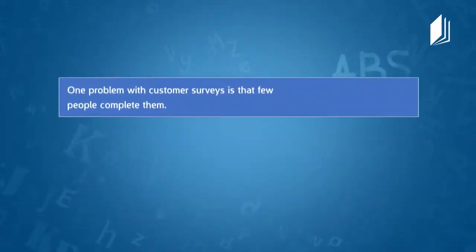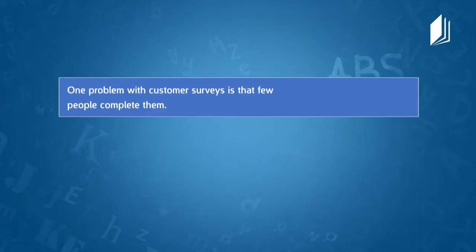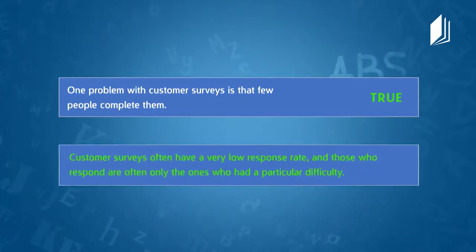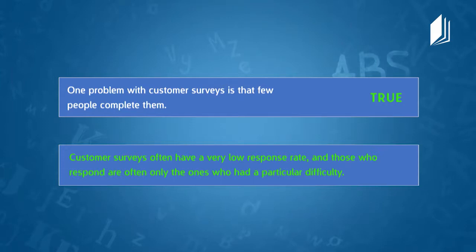Now let's look at some true or false statements based on the text. First statement: 'One problem with customer surveys is that few people complete them.' We talked about customer surveys in the first part of the text — the answer is true, because customer surveys often have a very low response rate and those who respond are often only the ones who had a particular difficulty. The previous system is not reliable — that's why they use mystery shoppers.